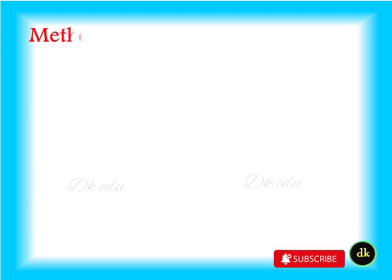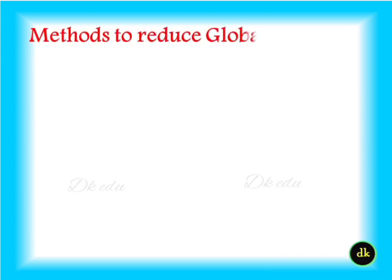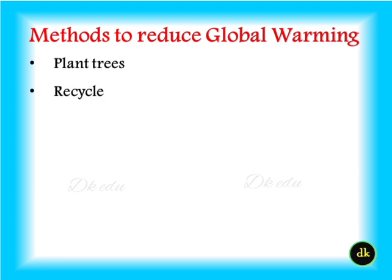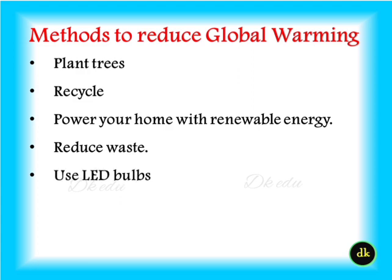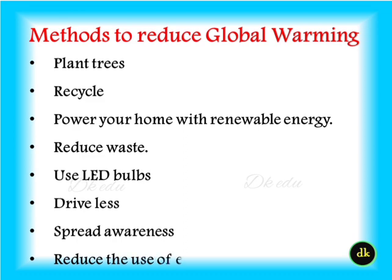Methods to reduce global warming: Plant trees, recycle, power your home with renewable energy, reduce waste, use LED bulbs, drive less, spread awareness, and reduce the use of electronic devices.